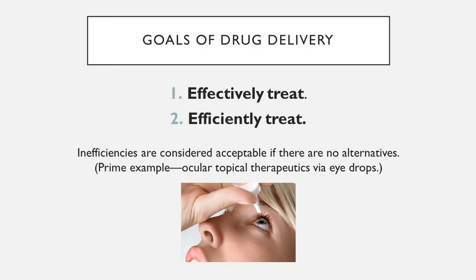The primary goal in drug delivery is to effectively treat the patient — bringing the drug in the most effective way possible to treat their particular disease, symptom, or sickness. A secondary objective is to efficiently treat that patient, making the most use of the available drug dosed to them. Inefficiencies are very often considered acceptable, particularly if there are no suitable alternatives.